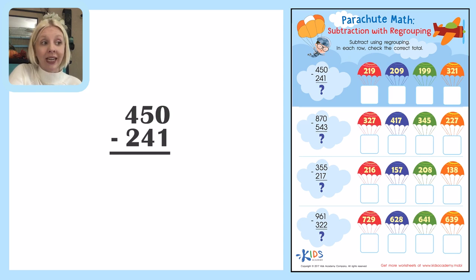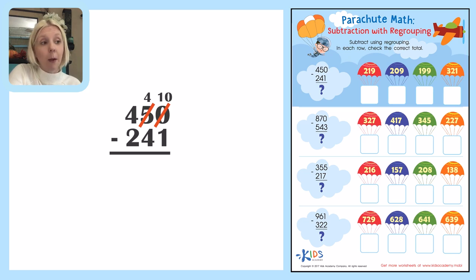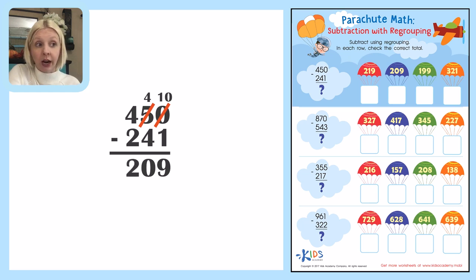I'm going to need to turn this into a ten. The way I do that is I add ten to whatever number this is, so that's just going to be ten. But I can only do that if I take away from the next column over, which is our tens place. So the five is going to be changed into a four since I took away ten and gave it to this side. So ten minus one is nine, four minus four is zero, and four minus two is two. So my answer is 209.